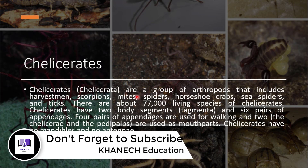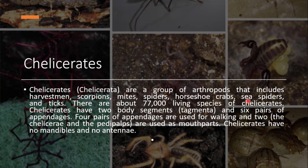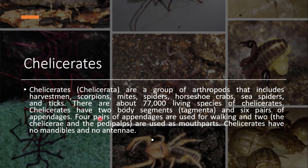Next is Chelicerata. Chelicerata is a group of arthropods that includes harvestmen, scorpions, mites, spiders, horseshoe crabs, sea spiders, and ticks. There are about 77,000 living species in this group. Their bodies are divided into two segments, and six pairs of appendages are present — four pairs used for walking and two pairs used as mouthparts. Chelicerates have no antennae and no mandibles.